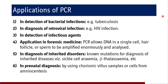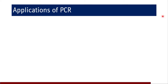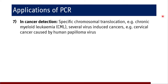Prenatal diagnosis by using chorionic villus samples, cells from amniocentesis, or circulating fetal DNA from maternal blood can be used. In cancer detection also PCR is employed — specific chromosomal translocation in case of chronic myeloid leukemia, several virus-induced cancers, or cervical cancer caused by human papilloma virus can be detected with the help of PCR.